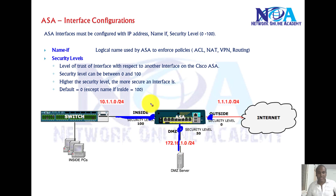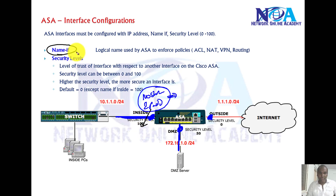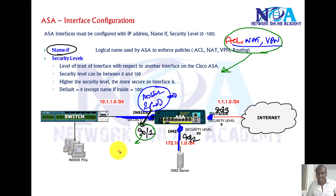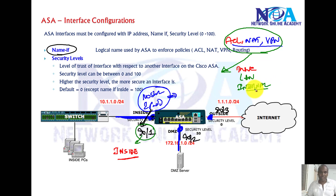When connecting your ASA firewall to the LAN, outside, and DMZ interfaces, you must configure an IP address and the 'no shutdown' command — the same as on routers. But there are two additional configurations required on ASA. One is 'nameif' — you have to assign a name to the interface. Physically you might connect G0/1, G0/2, G0/3, but when configuring ACLs, NAT, or VPN, you refer to the interface by its name, not as G0/1. Commonly we use 'inside' as the name, but you can use any name.